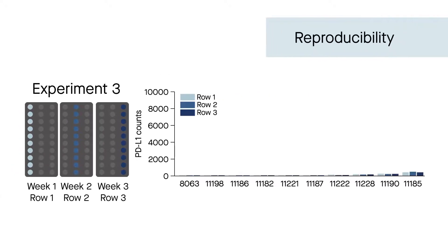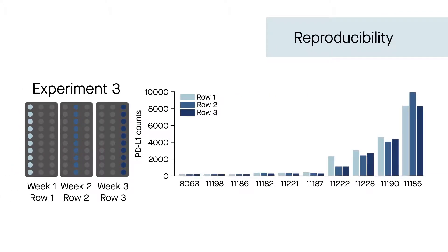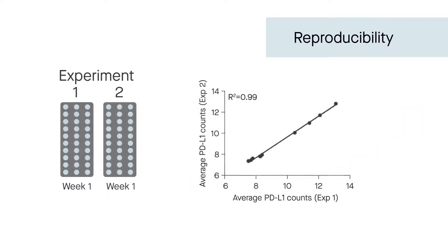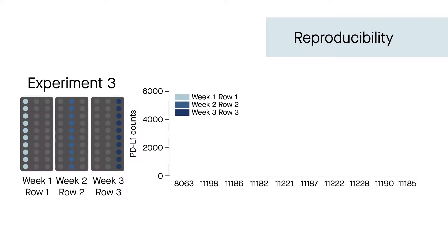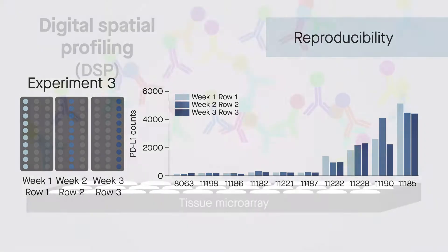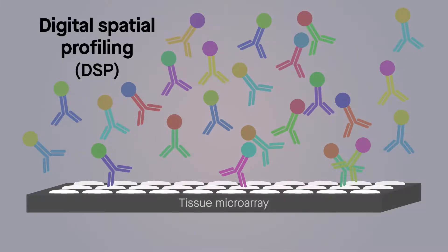They also observed high reproducibility of the DSP results between rows on a single microarray and between whole experiments conducted on two different arrays. What's more, reproducibility remained high even when rows were sampled one week apart.